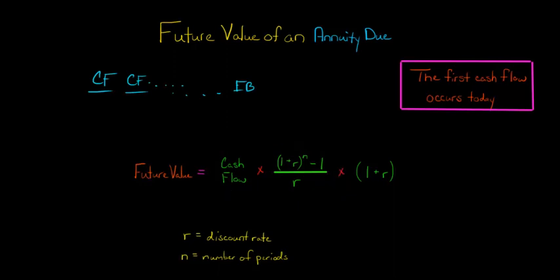However, we are doing the future value of an annuity due, so we take the formula for a future value of an ordinary annuity, and then we multiply it by 1 plus the discount rate. So you're just taking the future value of an ordinary annuity and multiplying it by 1 plus R. That will give you the future value of an annuity due. So this entire formula right here is the future value of an annuity due.